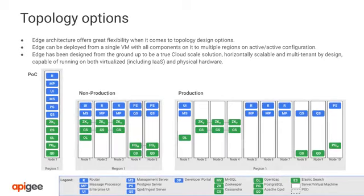Apigee Edge components can be arranged into multiple groupings we call topologies. These topologies range from a single machine to many machines in different data centers. The Apigee Edge architecture is horizontally scalable — this is true for all components. On the diagram, nodes correspond to physical or virtual servers, and each node contains one or more Apigee components. Each component represents one or more processes hosted on those nodes. Nodes are added to meet capacity, availability, resiliency, and network zoning requirements.